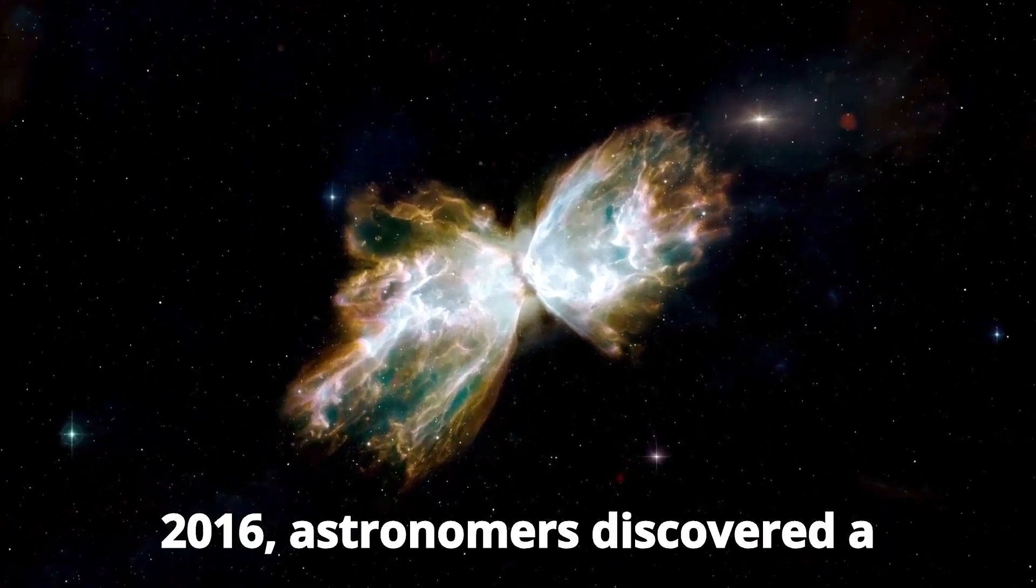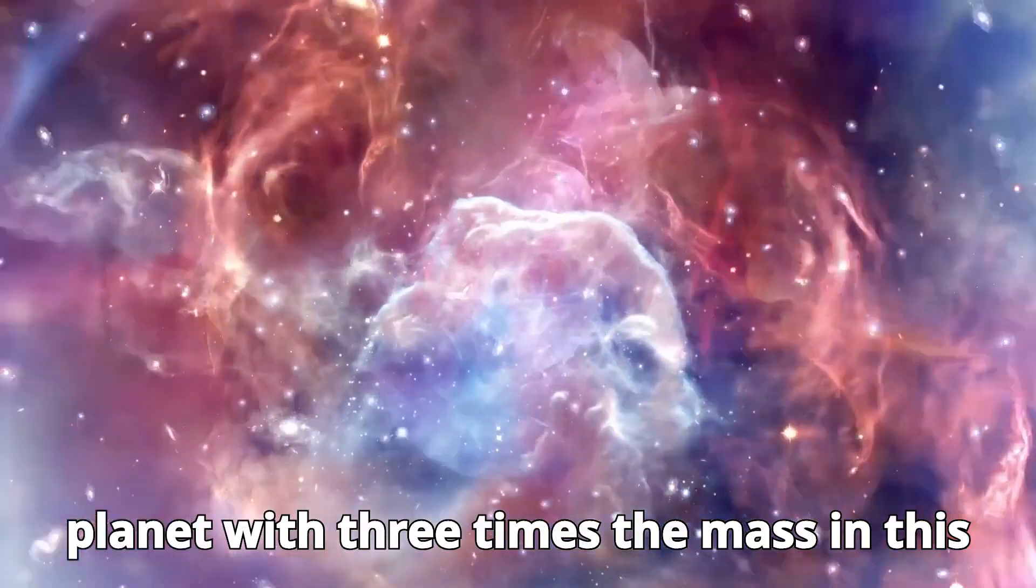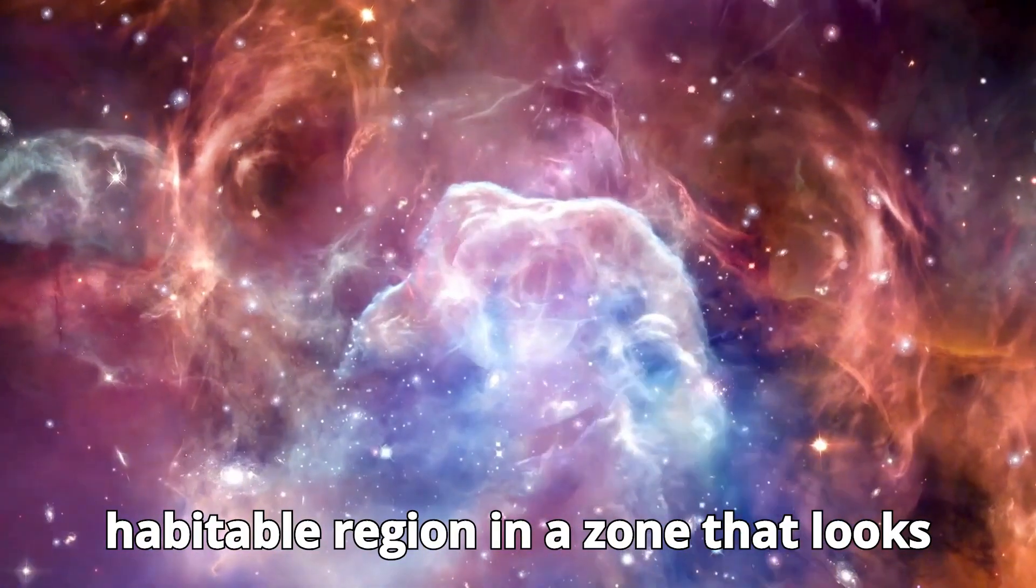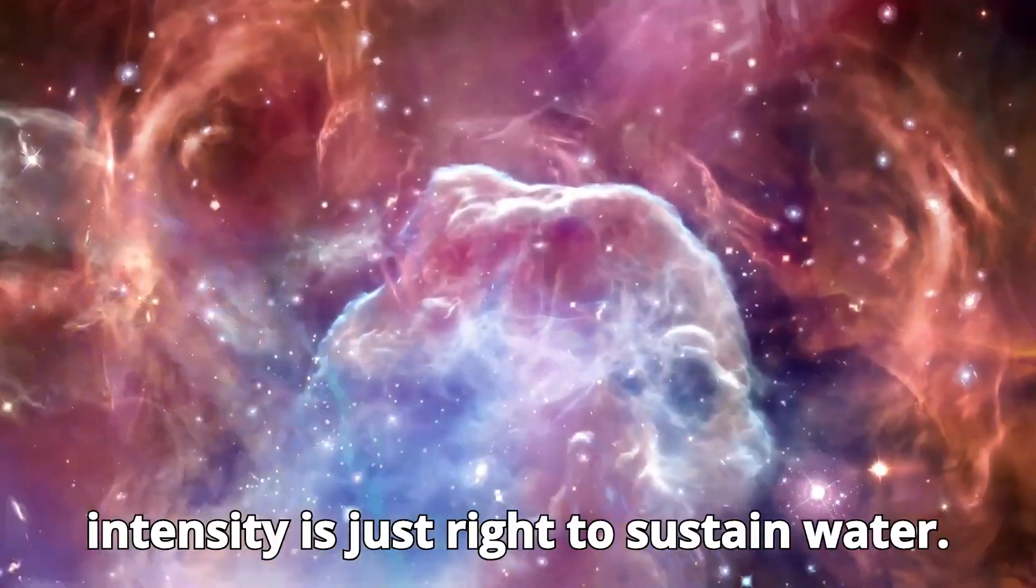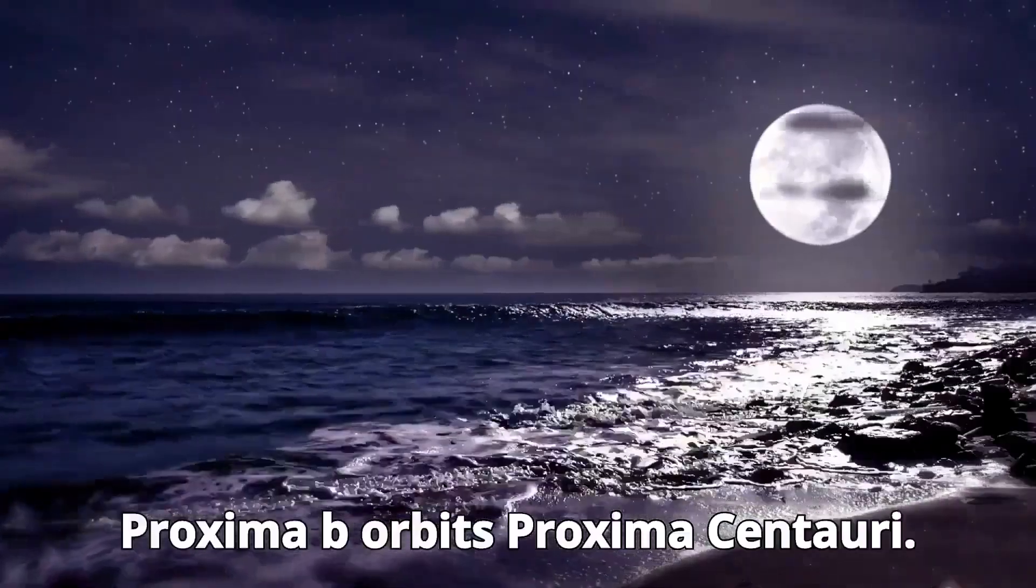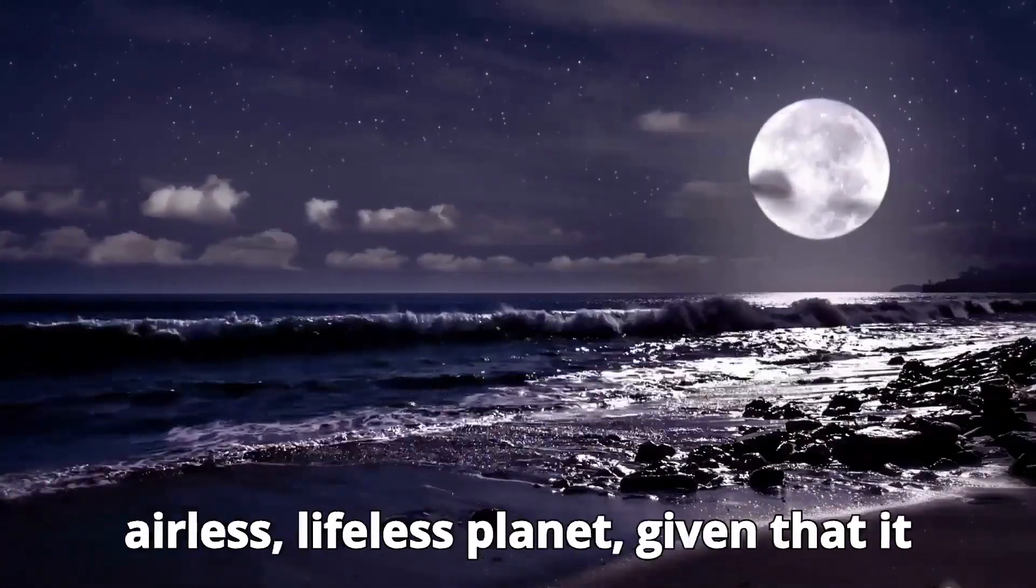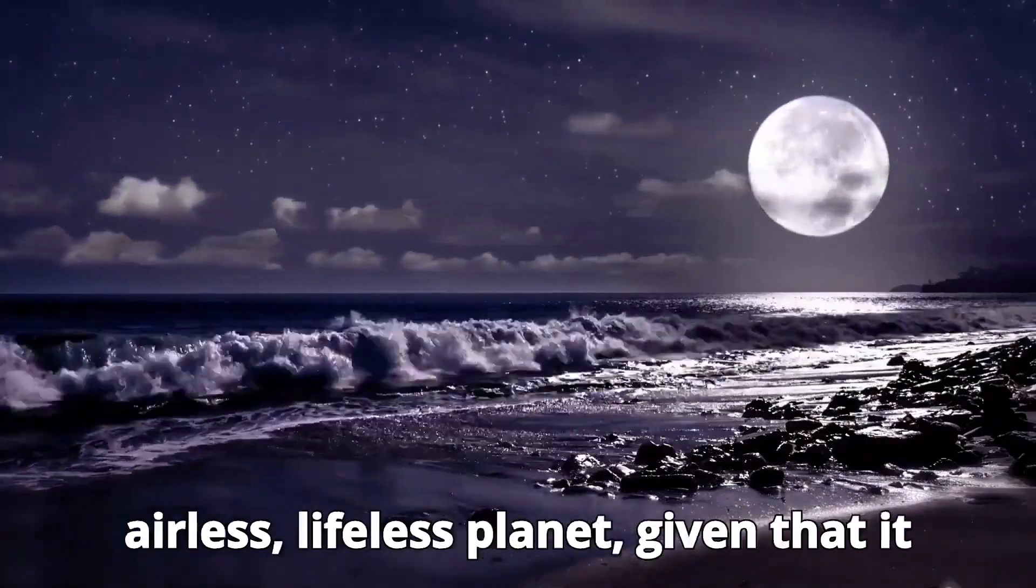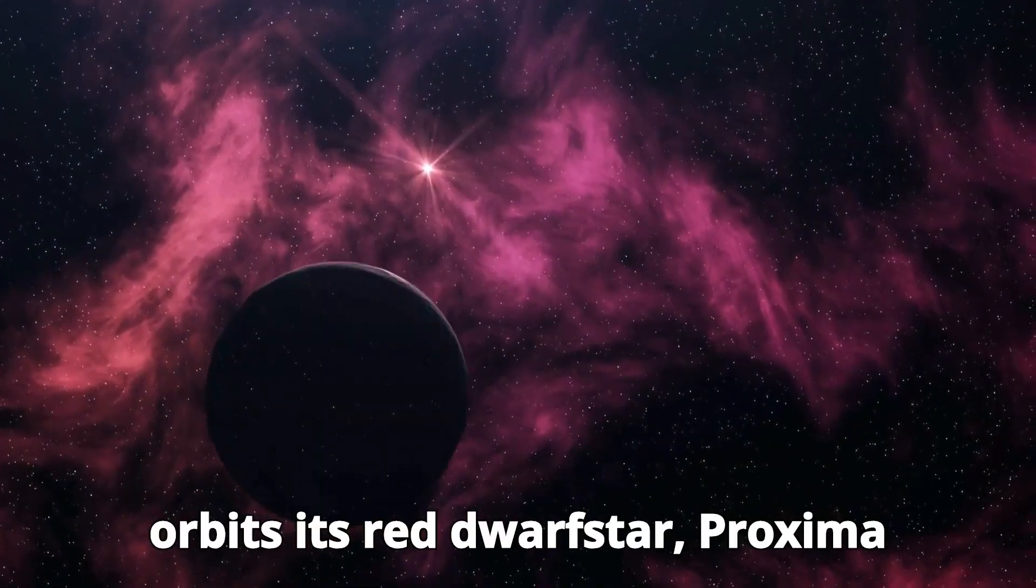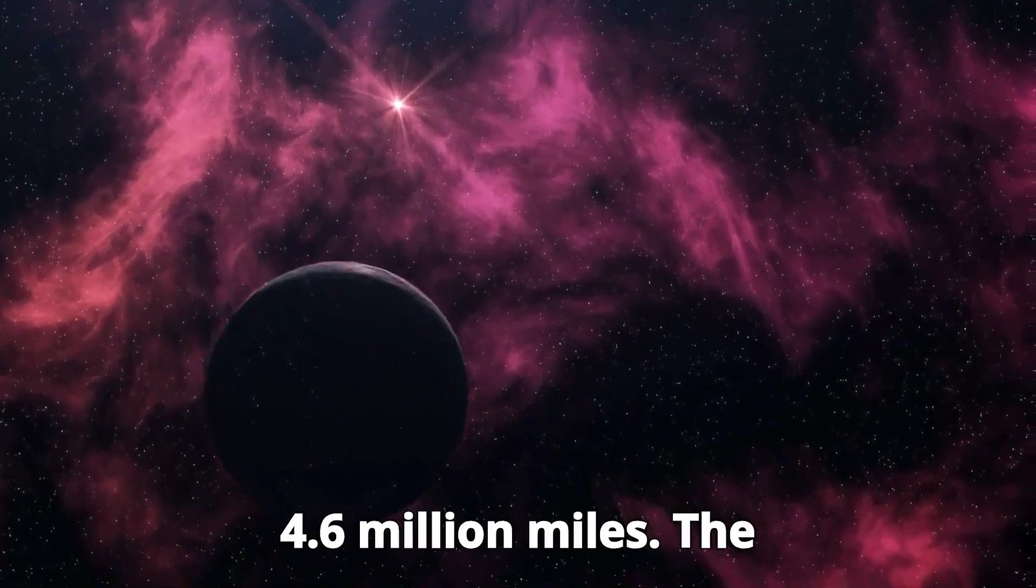In August 2016, astronomers discovered a planet with three times the mass in this habitable region in a zone that looks like a habitable zone where the light intensity is just right to sustain water. Proxima b orbits Proxima Centauri. It's possible that Proxima b is an airless, lifeless planet, given that it orbits its red dwarf star, Proxima Centauri, at a distance of only 4.6 million miles.